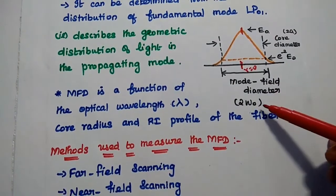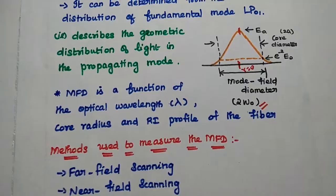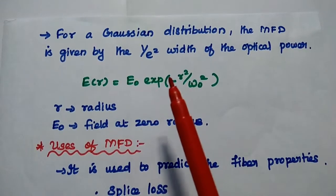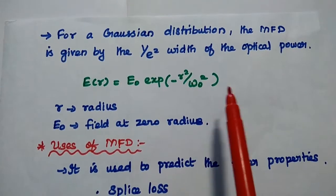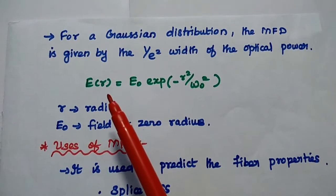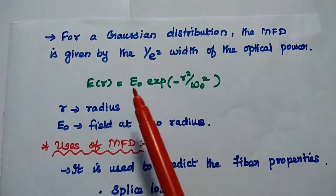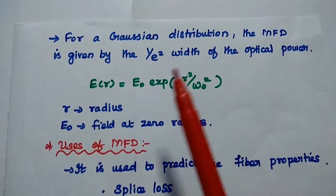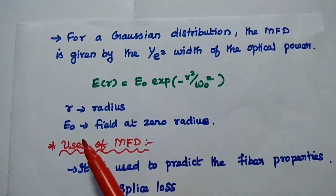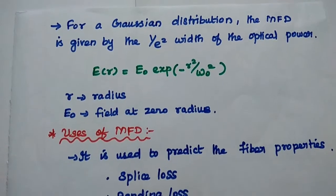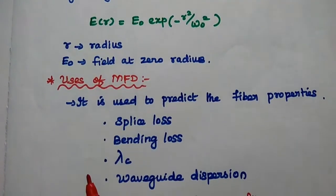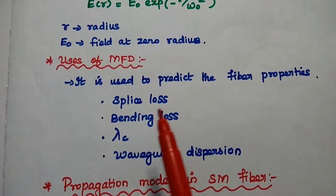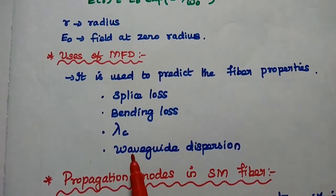The mode field diameter value is also called as spot size. For a Gaussian distribution, the MFD value is given as the 1/e² width of the optical power. The field distribution with respect to the core radius is given as E(R) = E₀ × exp(−R² / ω₀²), where R is the core radius and E₀ is the field at zero radius, that is the maximum optical power in the core. MFD is mainly used to predict fiber properties like splice loss, bending loss, cutoff wavelength, and waveguide dispersion.